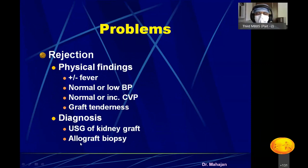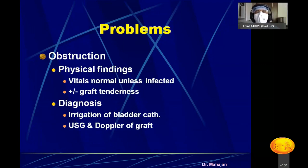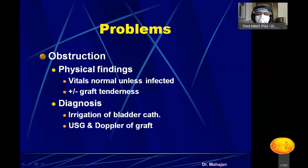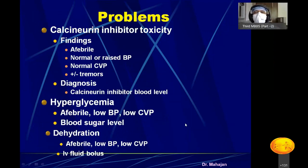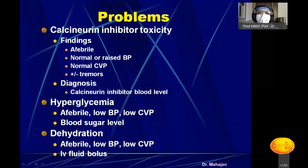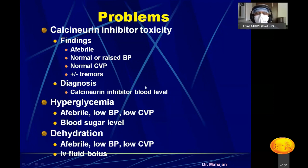Rejection is diagnosed by graft biopsy — without a graft biopsy, you cannot diagnose rejection — and is then treated by anti-rejection drugs. If there is urinary obstruction due to bladder clots, the bladder catheter is irrigated and an ultrasound is done for diagnosis; if obstruction persists, the anastomosis must be redone. Calcineurin inhibitor toxicity is very common after transplantation because it is a nephrotoxic drug. Blood levels of calcineurin inhibitor are measured to detect toxicity immediately.